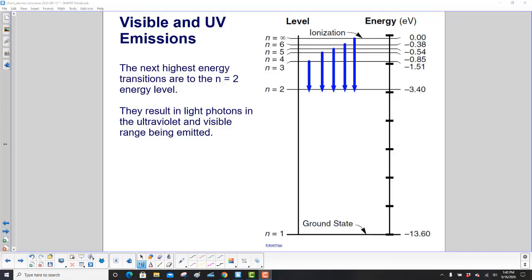The next highest energy transitions are to the n equals 2 level. So you can go from n equals 3 to n equals 2, n equals 4 to n equals 2, and so forth. And you can see those are smaller energy transitions. The arrows are smaller, smaller changes in energy. They result in light photons in both the ultraviolet and the visible range being emitted.